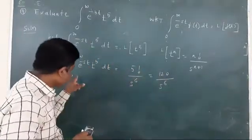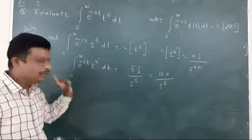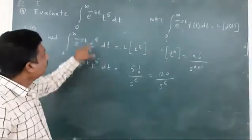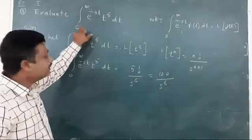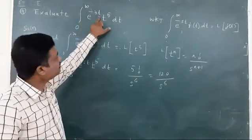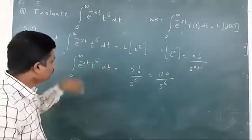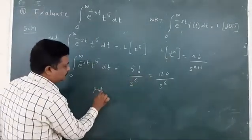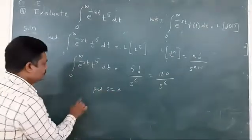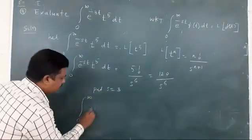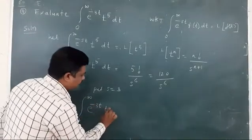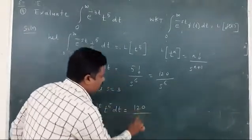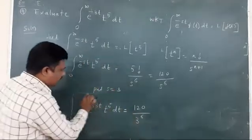So this is the value of the integral from 0 to infinity of e to the power of minus st times t to the power of 5 dt. In the actual question we have to evaluate the integral from 0 to infinity of e to the power of minus 3t times t raised to 5 dt. For that I will put s equal to 3 on both sides. Therefore the integral equals 120 upon 3 to the power of 6. So this is the required answer.